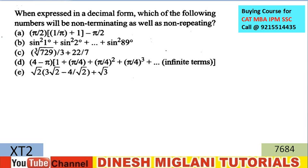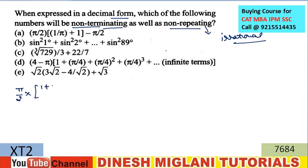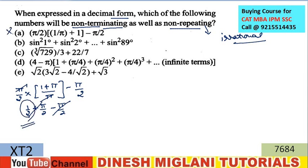Next question: when expressed in decimal form, which of the following numbers is non-terminating and non-repeating? In the number system, non-terminating and non-repeating means an irrational number. I check option A — it simplifies to 1/2 after the pi terms cancel, so it's rational. Option B — sin²1° + sin²2° + ... + sin²89°: using sin²θ + cos²θ = 1 pairs, plus sin²45° = 1/2, this also gives a rational number.